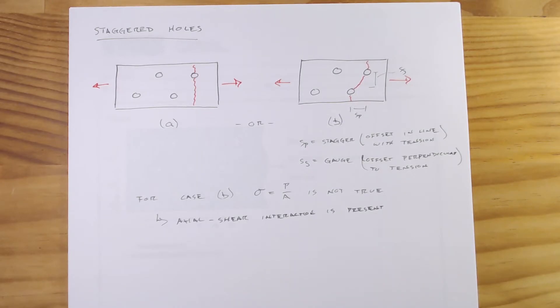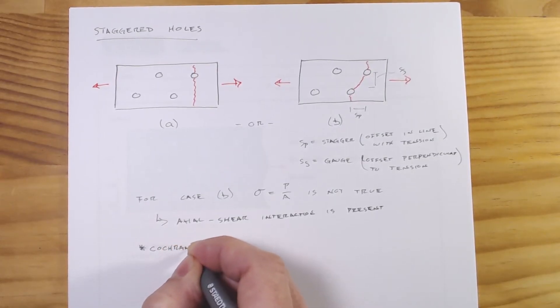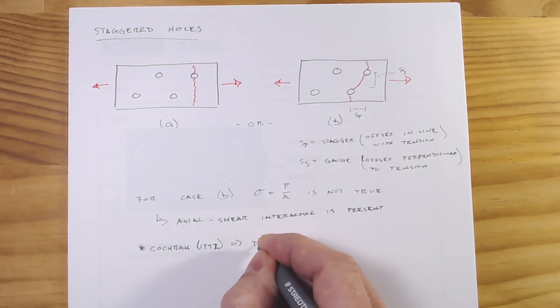So the way that we look at, the work that Cochran put out in 1992, and this has been adopted by the code, and essentially we're going to treat this as an axial problem.